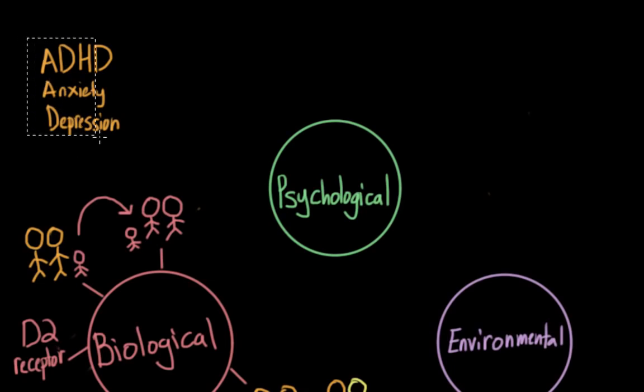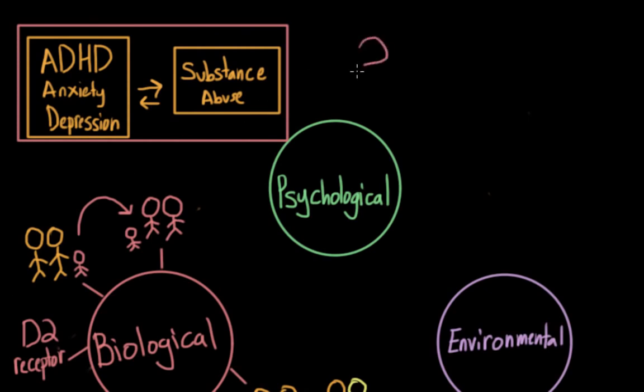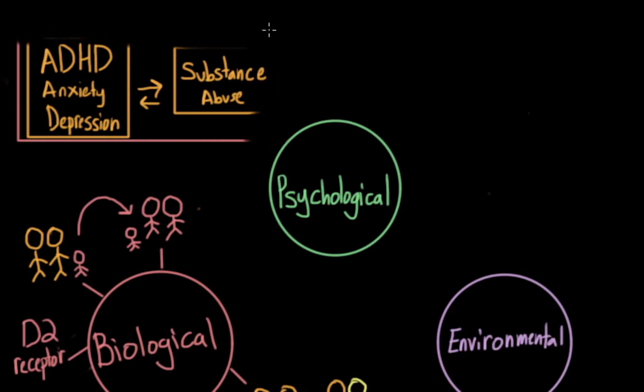However, we should also remember that this is a correlation. And even though we might be tempted to conclude that mental disorders lead to substance abuse, that might not be the case. It could be that substance abuse leads to mental disorders or perhaps could trigger mental disorders in those who have a genetic predisposition. Or maybe both mental illness and substance abuse problems could be generated by a third factor, maybe some genetic vulnerability for both. Either way, it's important to keep in mind when we discuss all of these risk factors that correlation does not imply causation.